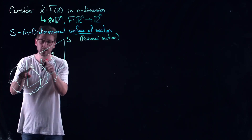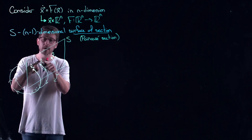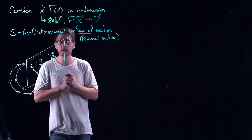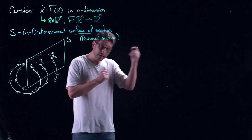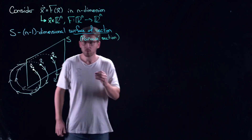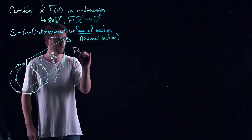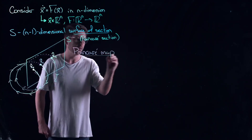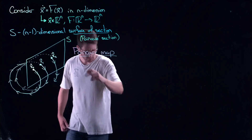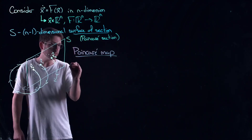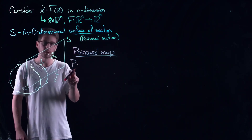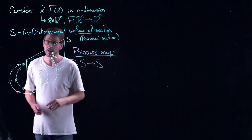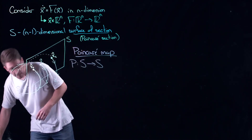I started in the section at x0, then I collect x1. When I get x1, I collect x2, and I look for the next intersection — that could be x3, then x4, x5, x6. What I actually get here is what's called a Poincaré map — a function P (in honor of Poincaré) from the surface back to itself, from S to S.